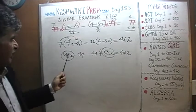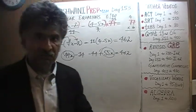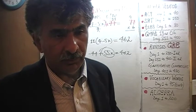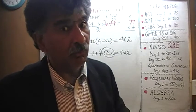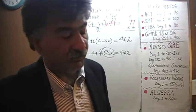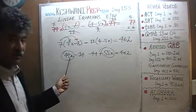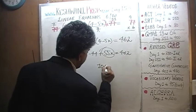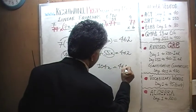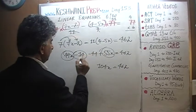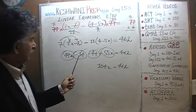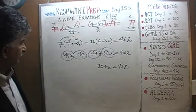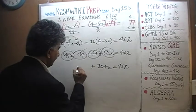So we have 55x plus 49x. How much is 55 plus 49? 55 plus 50 would have been 105 — but we don't have 50, we have 49, so it's going to be 104. So 104x equals 462. And we have negative 14 and negative 44 — that's going to be negative 58. So we have 104x minus 58 equals 462.